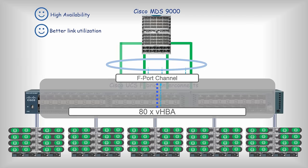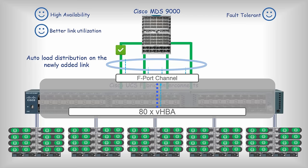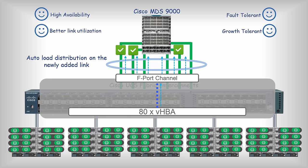When the failed link comes up, the traffic starts using that link automatically. If you want to grow and desire to increase the uplink bandwidth, just connect the cables between UCS Fabric Interconnects and MDS switches. Traffic will automatically spread across newly added links. Those are the four merits of SAN uplink aggregation called F port channel, possible only when you have Cisco MDS and UCS together.